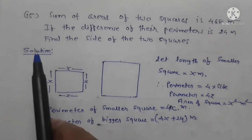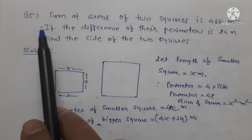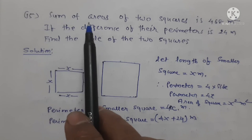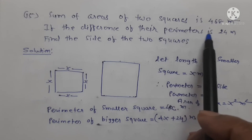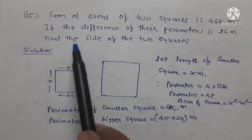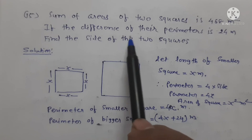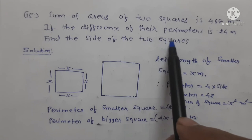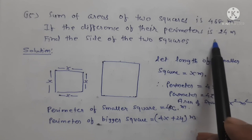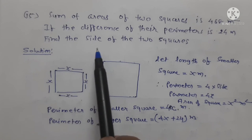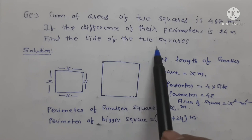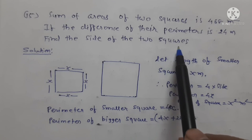Now we start question number 16: The sum of areas of two squares is 468 square meters. If the difference of their perimeters is 24 meters, find the sides of the two squares.